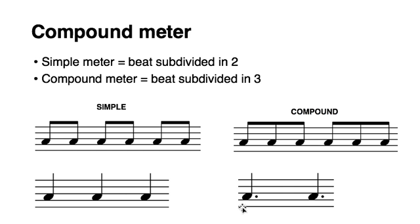The idea that we have a dotted quarter note, or in more general terms, a dotted rhythm as the beat in compound meter, this idea holds true for all compound meters. The beat is always a dotted rhythmic unit.